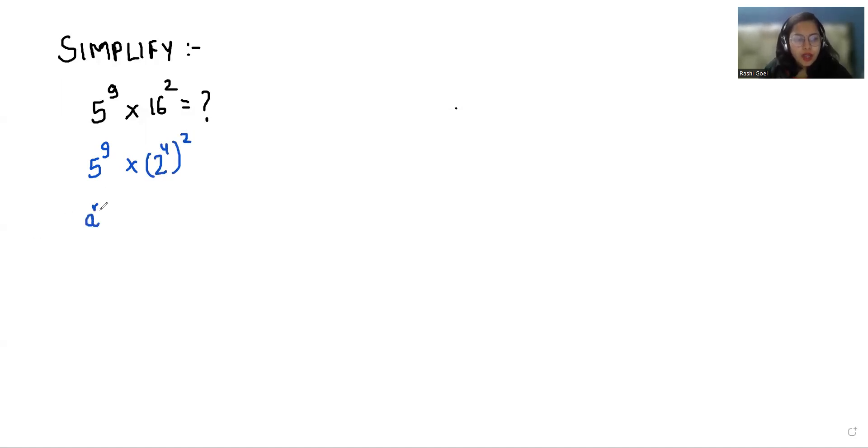Now according to exponent rule a power n power m we can write it as a power nm. So 5 power 9 times 2 power 8. Now 5 power 9 we can write as 5 power 8 plus 1 times 2 power 8.